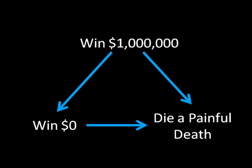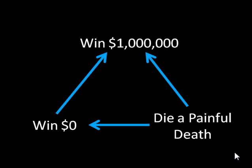One point from the last video is that rationality is not the same thing in a game theoretical context as sensibility. We define rationality linguistically as pretty much a synonym with sensibility, but here rationality is defined differently — just as a complete and transitive preference relation. So you could have something where dying a painful death is the most preferred outcome. They prefer dying a painful death to winning a million dollars to winning zero dollars. It's a little bizarre, but if someone had this preference relation, we would not have a hard time studying their optimal behavior in the context of a game theoretical model.